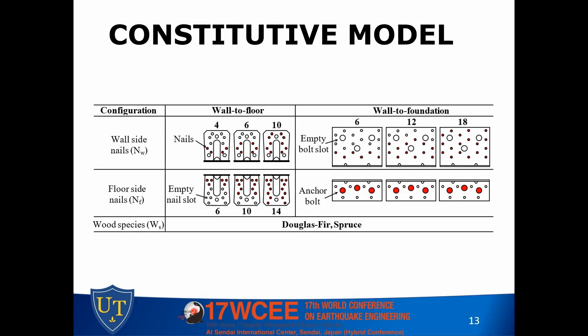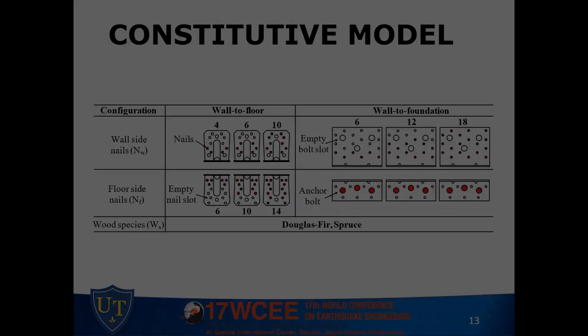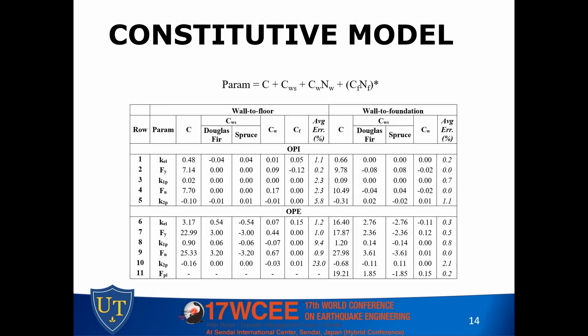We then expanded the constitutive model over important design parameters: the number of nails on the wall side, the number of nails on the floor side, and the wood species of the CLT panels. In total we analyzed 48 different numerical models. With the results of these 48 models, we created a simple equation where the left part represents any of those 10 or 11 constitutive model parameters. The factors in the equation were calibrated into a table, so based on the number of nails and wood species, you can look up the table, plug into the equation, and obtain any of the ten parameters required for the constitutive model.